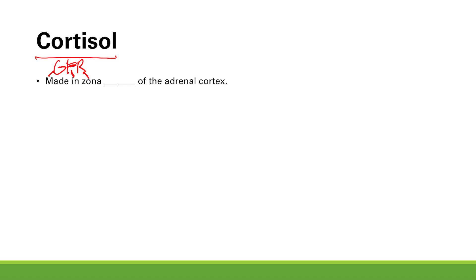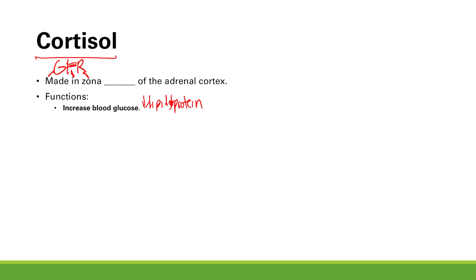The functions of cortisol — cortisol is a glucocorticoid, and a glucocorticoid functions to increase blood sugar, so it increases blood glucose. To increase blood glucose, you're going to do glycogenolysis, breaking down glycogen into glucose. You also break down lipid and protein, providing amino acids and glycerol for gluconeogenesis. That gives you decreased lipids and less muscle as you break down protein from your muscles.